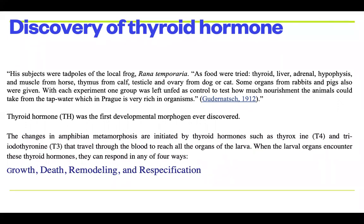The experimental biology started with developmental biology. What they did is they took the tadpole, thinking it could serve as a wonderful model for studying development and related processes. They took different organs from animals — for example, from a calf — dissected them, and separately fed tadpoles with individual organs. Some tadpoles were fed only thyroid, some only liver, some with adrenalin, to understand what individual organ systems are capable of doing and how they influence growth and development.